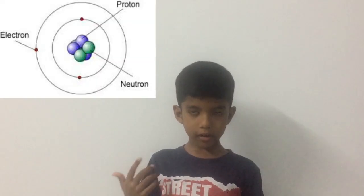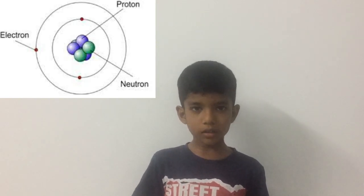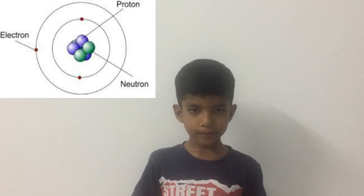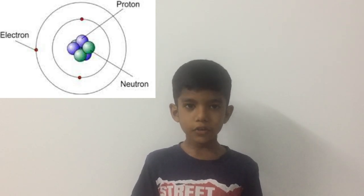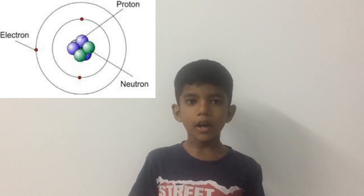Hey guys, today we're going to talk about density and buoyancy effect. Let's start from the basics. Do you know the basic unit of the universe? It is the atom. There is a proton and neutron in the middle and an electron orbiting them. When proton and neutron get together they're called the nucleus. There are many types of atoms like hydrogen atom, oxygen atom, and iron atom.